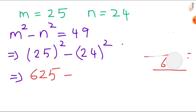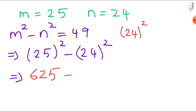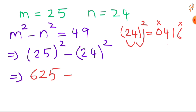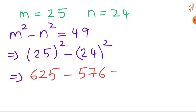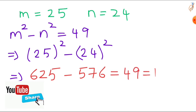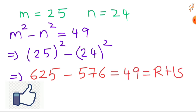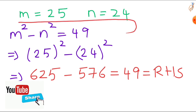Now find 24 squared: square the tens digit — 2 squared is 4, write 04. Square the units digit — 4 squared is 16. Skip first and last digits, multiply: 2 times 4 is 8, 8 times 2 is 16. Adding all you get 576. So 24 squared is 576. Subtracting: 625 - 576 = 49, which equals our RHS. So m = 25 and n = 24 satisfies the original equation.